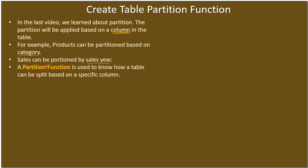A partition function is used to define how a table can be split based on a specific column. It tells you how to group the data. Importantly, the partition function does not bind to a specific table or column — it is written in a generalized way so that one partition function can be used for multiple table partitions.